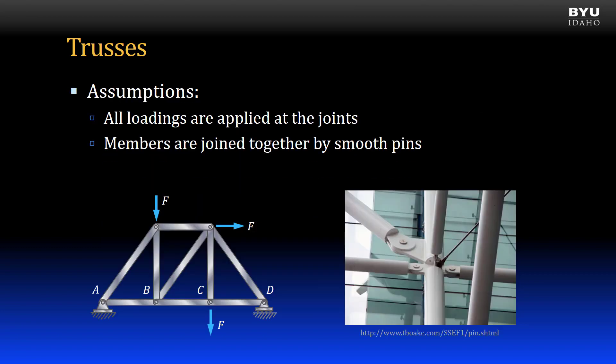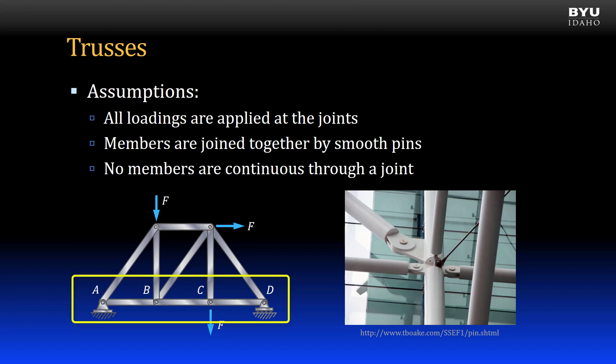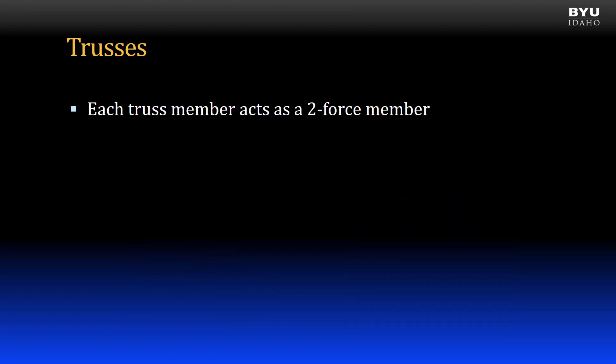One other assumption is that no members are continuous through a joint. For example, members AB, BC, and CD are three individual members connected to each other at the joints. This assumption is usually violated in real trusses, so these types of trusses are sometimes referred to as academic trusses.